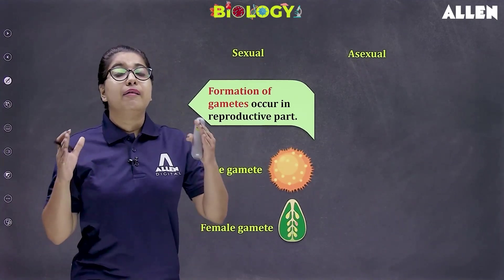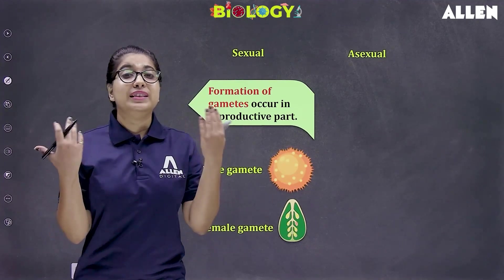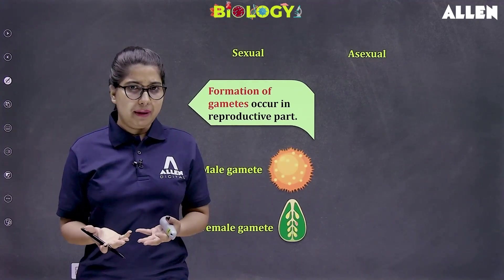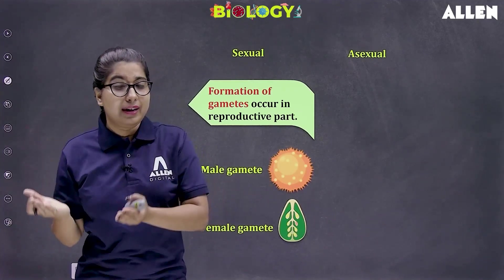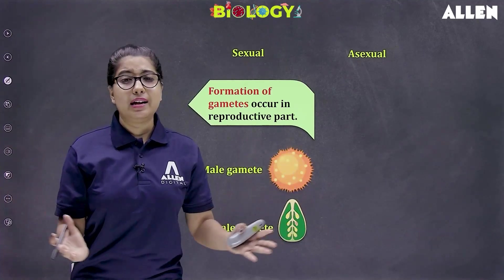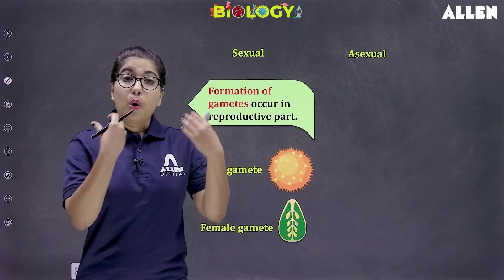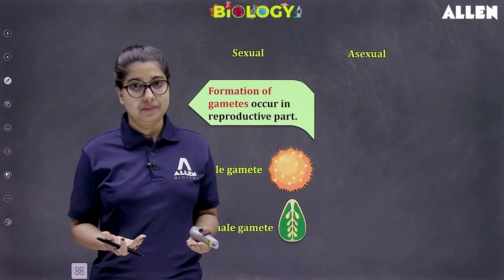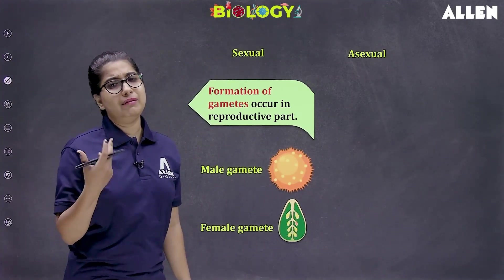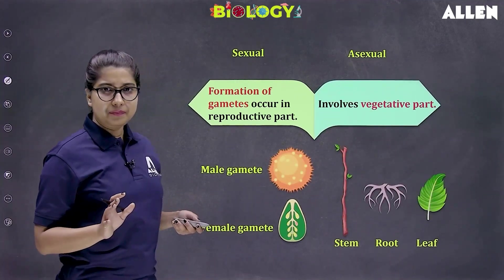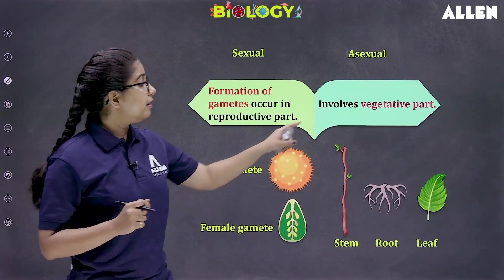What are gametes? Gametes are the reproductive cells. All living organisms' bodies are made up of cells — it can be one cell or many, up to millions or billions of cells. On that basis, we have unicellular organisms and multicellular organisms. Some of the cells are involved in reproduction — they are known as the reproductive cells, that is, the gametes. Formation of gametes occurs in sexual mode of reproduction. In asexual reproduction, only one parent is there, no formation of gametes is involved, and this basically involves the vegetative part.